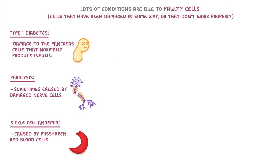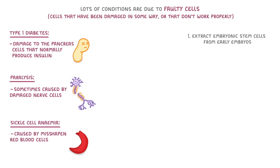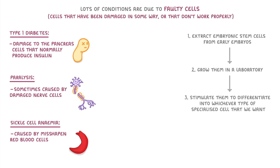The most common technique for actually doing this would be for scientists to extract embryonic stem cells from early embryos, grow them in a laboratory, and then stimulate them to differentiate into whichever type of specialized cell we want, so that we can then give them to the patient to replace their faulty cells.